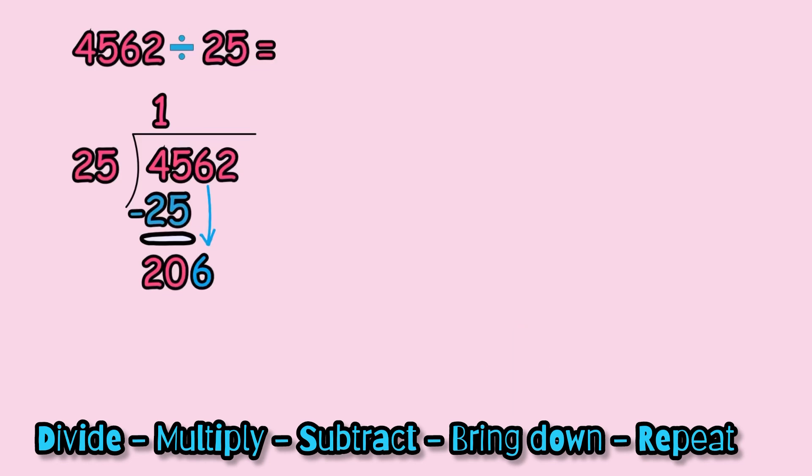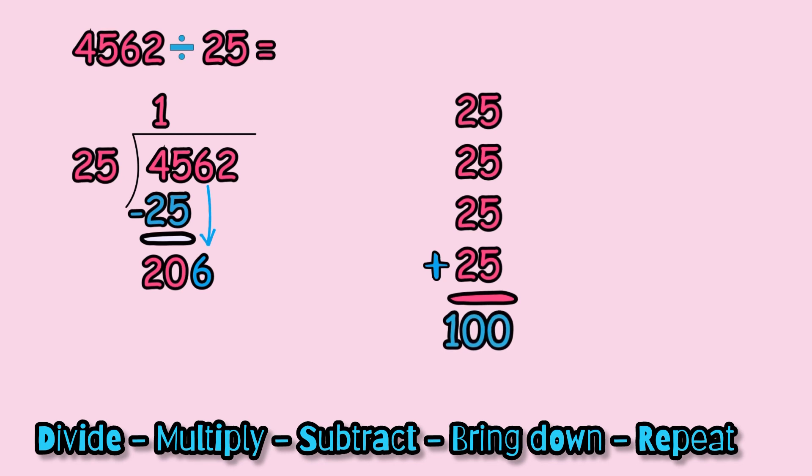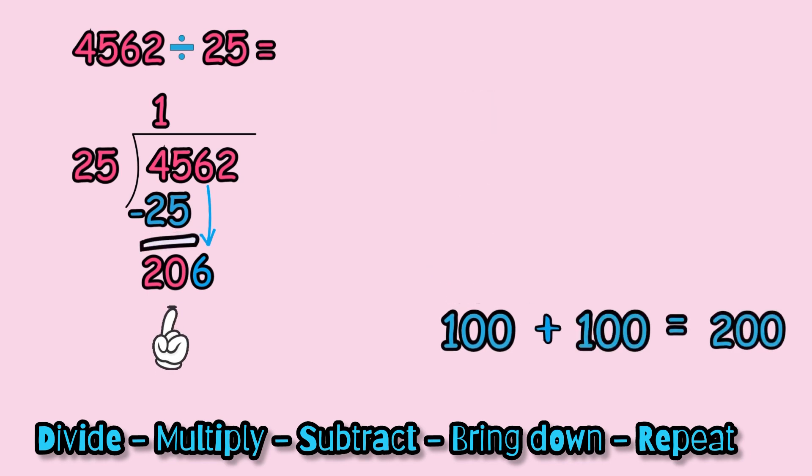Then we're going to bring down the next step, bring down the 6. Now we're going to get 206. Here we have to think harder because we have to find how many times can we put 25 into 206. It is not as hard as we think because 25 four times is equal to 100. If 25 four times is equal to 100, that means that 25 eight times is equal to 200. The number that we have is 206, that means that 8 could be the best option for us in this case.